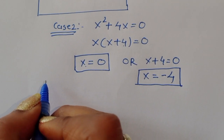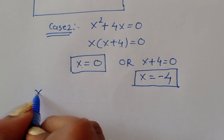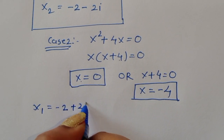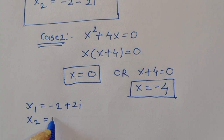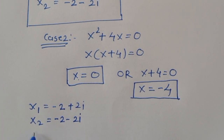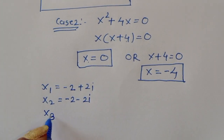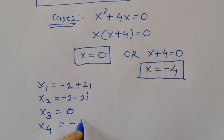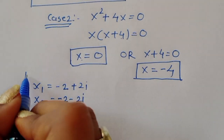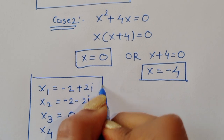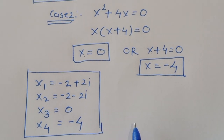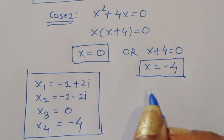So in total we got four values of x: x₁ = −2 + 2i, x₂ = −2 − 2i, x₃ = 0, and x₄ = −4. Now let's verify for x = −4.